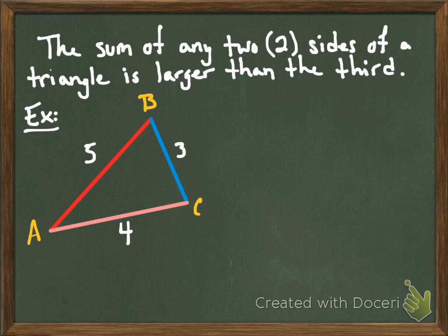So line segment AB is five, line segment BC is three, and line segment CA, or you could say AC, however you want to say it, is four. And I tried to color code this for you guys, make it a little bit easier to interpret. Let me know what you think of it.